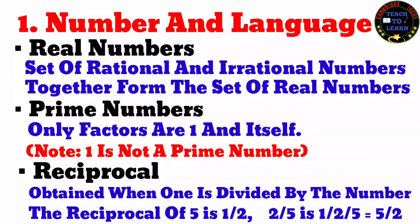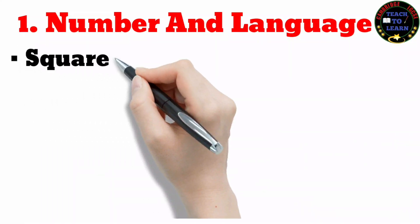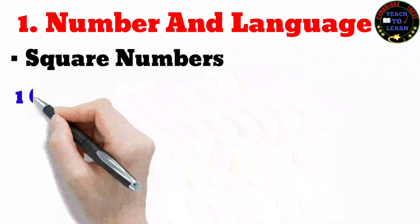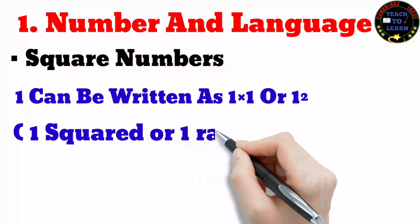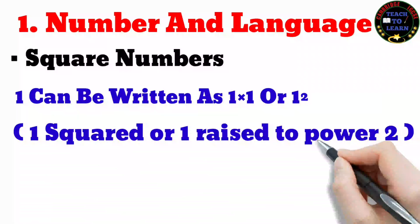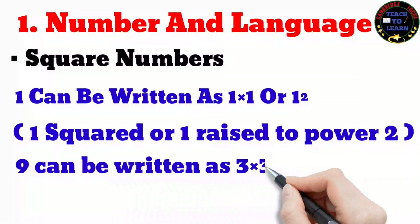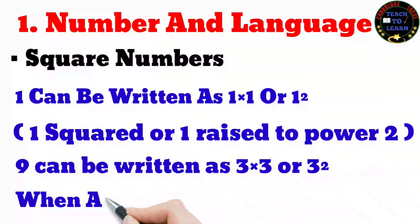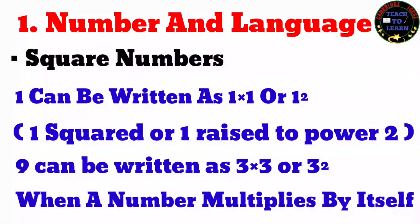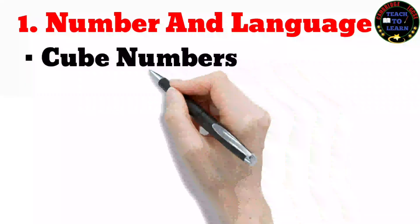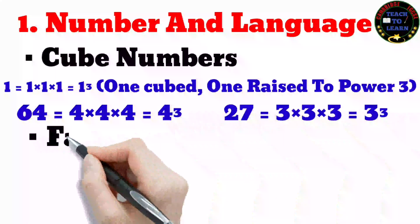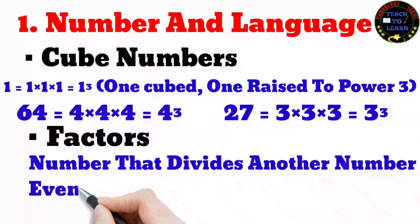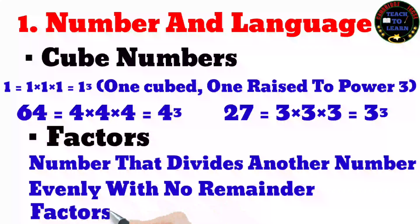Square numbers: one can be written as one multiplied by one, or one raised to the power two. Nine can be written as three multiplied by three, or three raised to the power two. When an integer is multiplied by itself, the result is a square number — one and nine are square numbers. Cube numbers: when an integer is multiplied by itself and then by itself again, the result is a cube number.